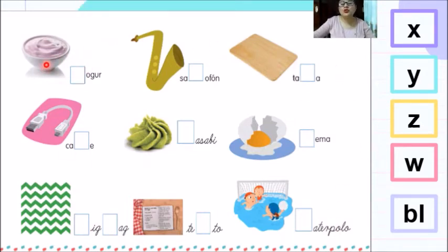Entonces, comenzamos. Aquí tenemos un yogur, saxofón, tabla, cable, wasabi, yema, zigzag, texto y water polo. Ahora, ya nombramos los objetos.